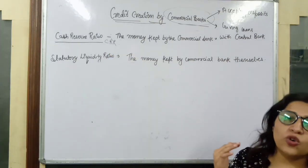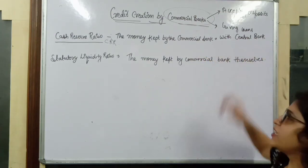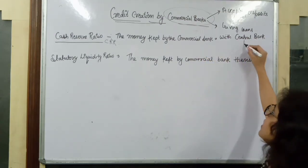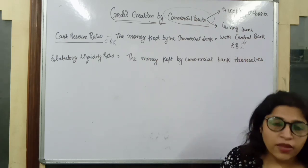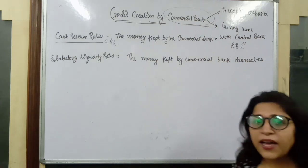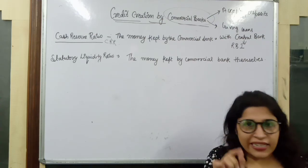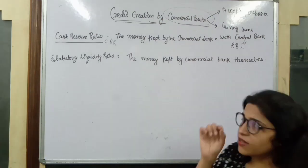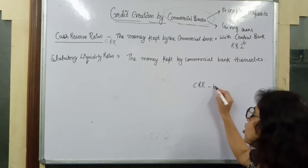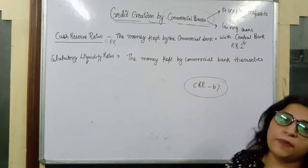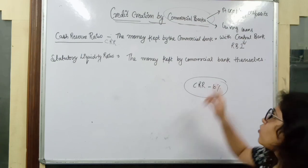CRR is the money that commercial banks have to pay to the central bank. The central bank means RBI — Reserve Bank of India. RBI fixes a CRR percentage every three months; for example, 10%. So 10% of the deposits is what commercial banks must keep with the central bank.